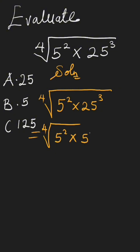5 raised to the power of 2, raised to the power of 3. This is the same as fourth root of 5 squared times - we have to multiply the powers here - 2 times 3 gives us 5 raised to the power of 6.